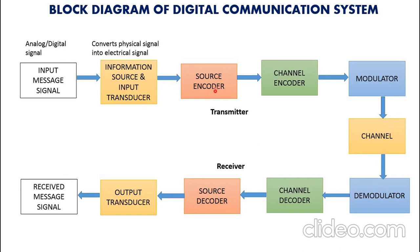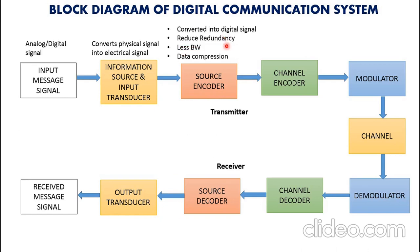The signal produced by this source is converted into a digital signal. For example, we need a source encoder. The source encoder is used to remove the redundancy in the code. If some part of the signal is removed, the bandwidth requirement will be less. With the help of source encoding, we can also do compression of the signal — so data compression is also there. After all these steps, the signal is now converted into a digital signal.